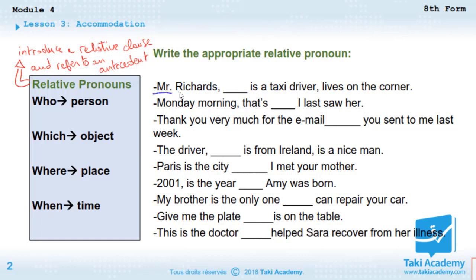The antecedent here is Mr. Richards, and since Mr. Richards is a person, we are going to use the relative pronoun 'who.' 'Mr. Richards, who is a taxi driver, lives on the corner.' Mr. Richards lives on the corner — 'who is a taxi driver' is not very important.